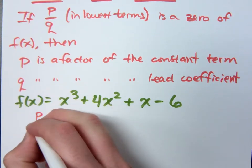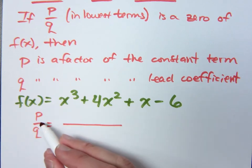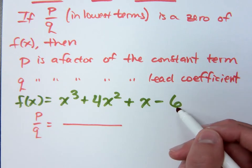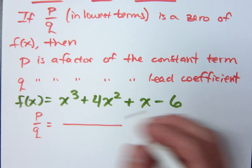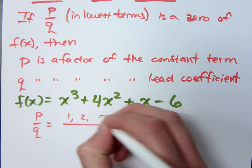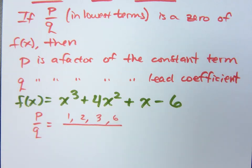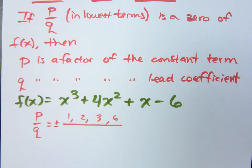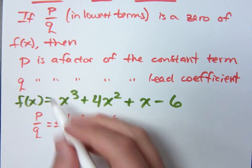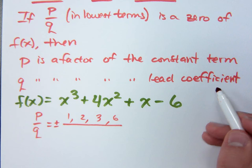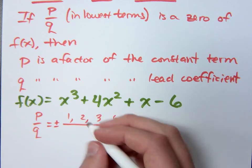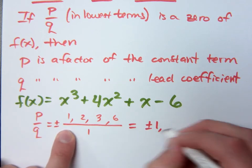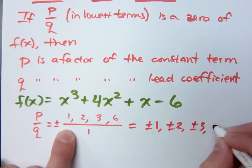So my zeros will be able to form P over Q. What did the P come from? Factors of the constant term. The constant term is 6, right? What are factors of 6? 1 and 6, 2 and 3. Now I'm going to put a plus or minus in front of this because it doesn't tell you anything about the sign. Your Q is the lead coefficient. The lead coefficient is 1, so Q is just 1. So your possible rational zeros would be plus or minus 1, plus or minus 2, plus or minus 3, plus or minus 6.